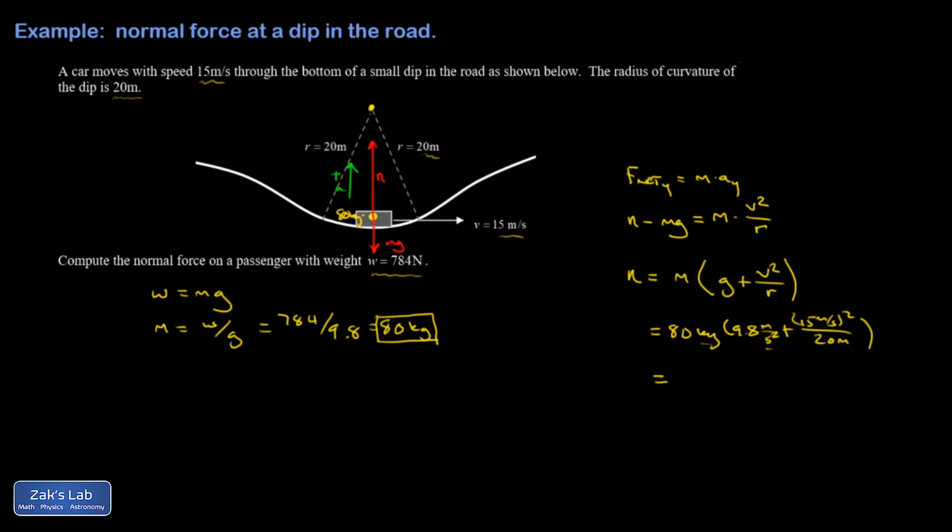I'm going to smash the numbers real quick. And I get 1684. So this is pretty intense to go through a dip with that radius of curvature that fast.